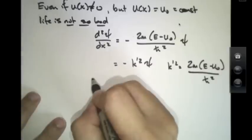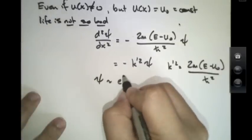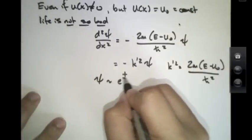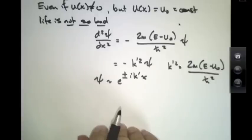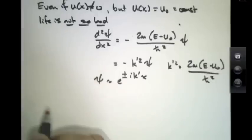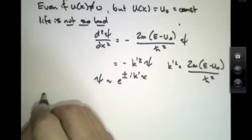And then again, we would expect psi to be something like e to the plus or minus i k prime x. So if, for example, we had a potential energy curve that looked like this.